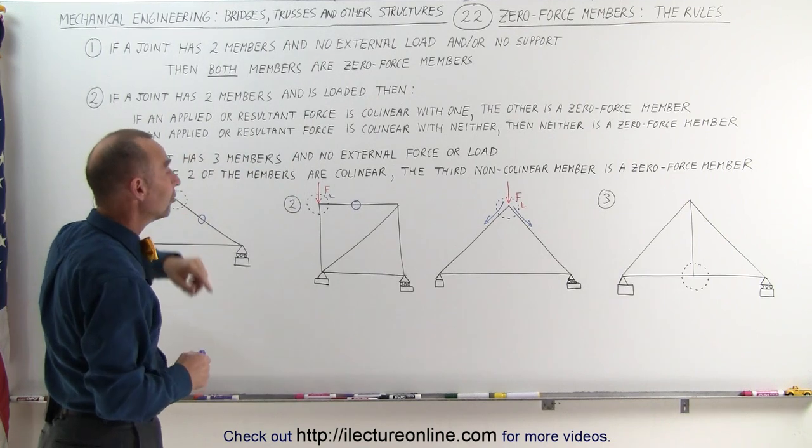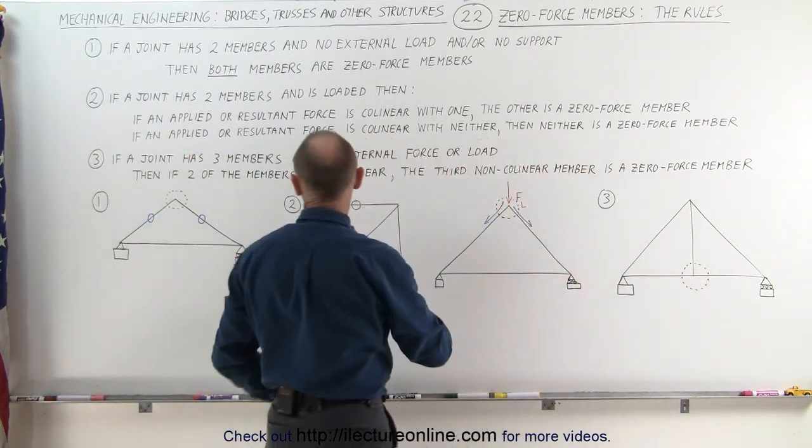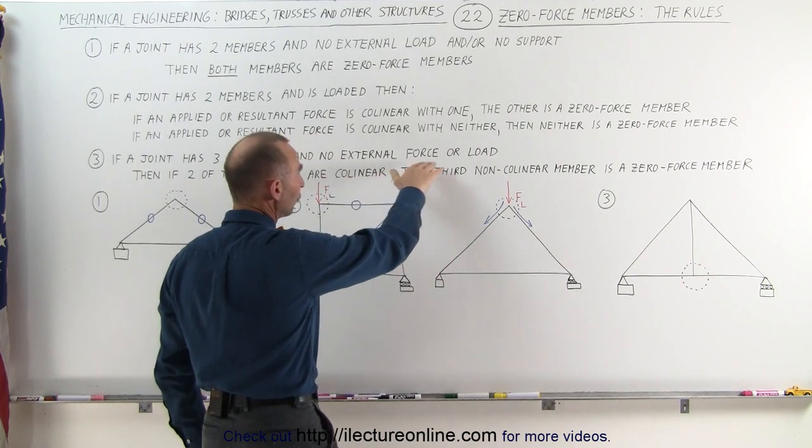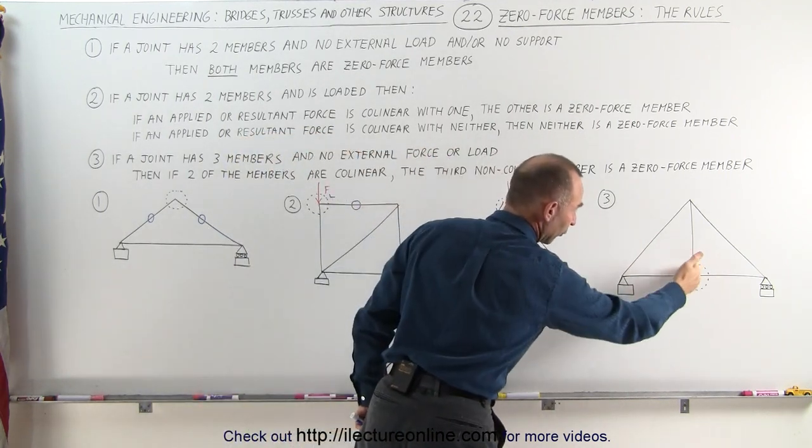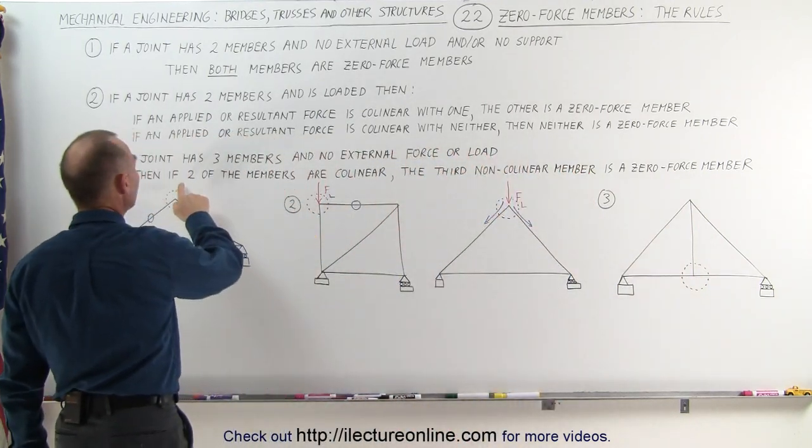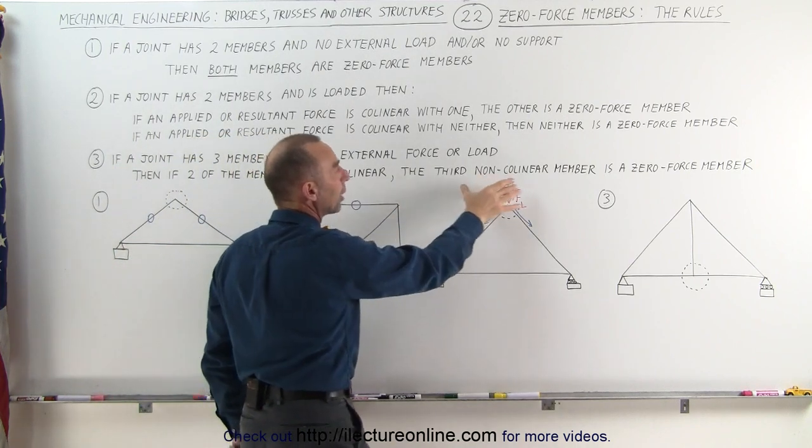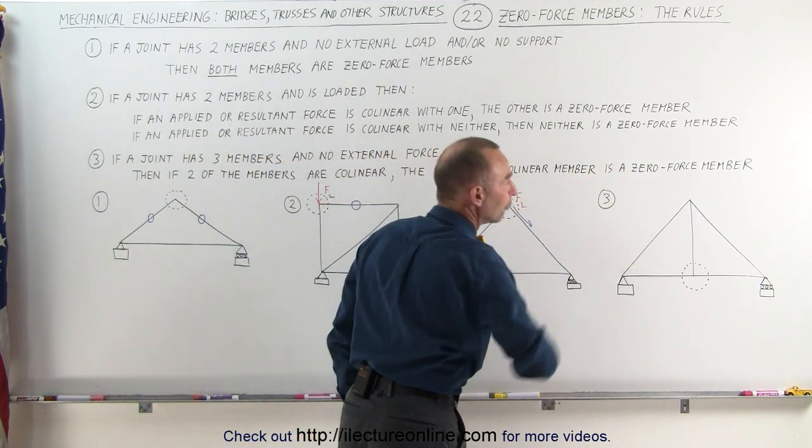if a joint has three members, so here we have an example of a joint that has three members, and no external force or load, there's no external force or load either on top here or hanging down from the bottom, then if two of the members are collinear, then the third member, the non-collinear member, is a zero force member.